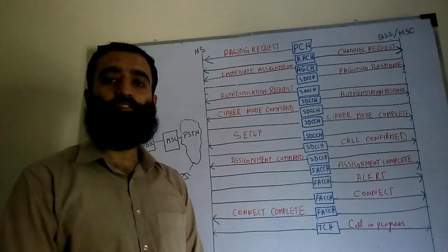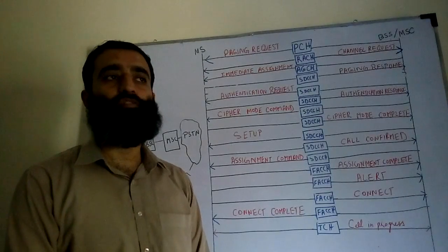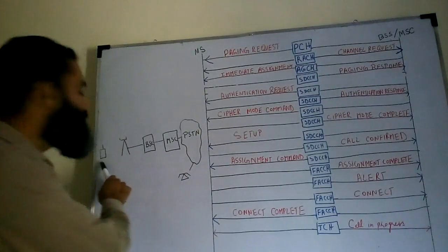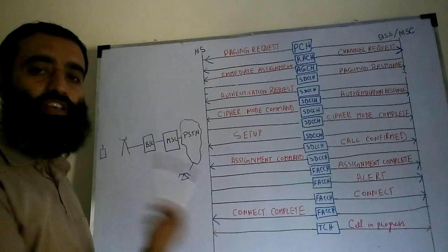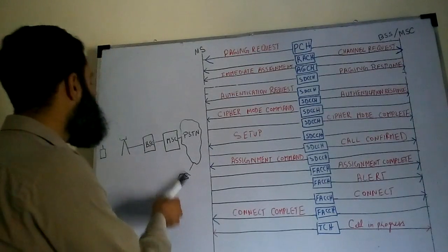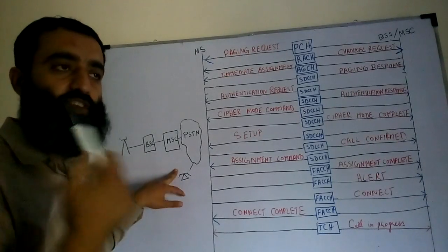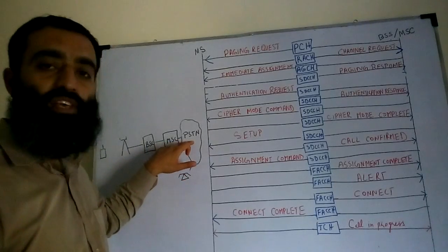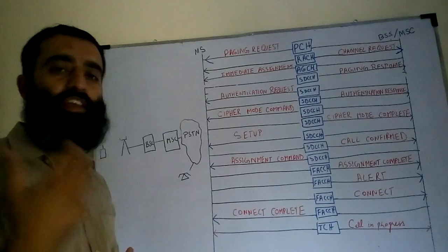Hi, what's up guys, it's Dr. Mozal Devana here. In today's lecture we are going to talk about how the logical channels are used in the GSM network to set up a call. In this scenario, we have assumed that this is a mobile station which has already registered itself with the network, meaning the network knows about its position. There is a fixed telephone user who is calling this mobile station. When the fixed telephone user calls this mobile station by dialing its number, this call is routed from the PSTN to the MSC.